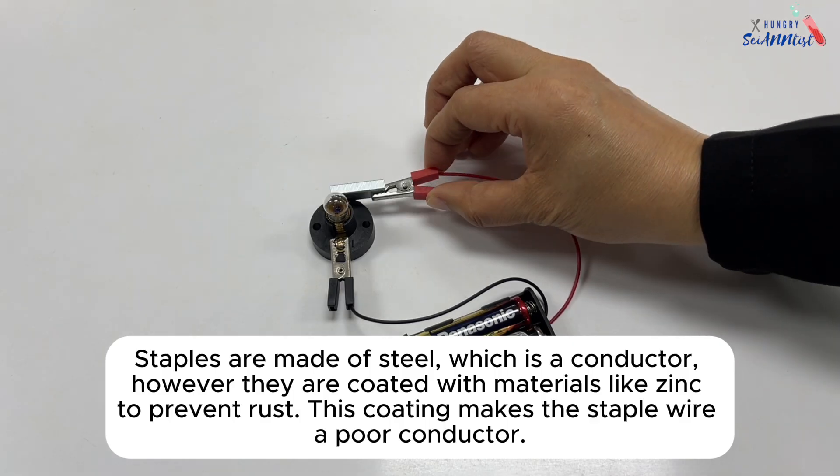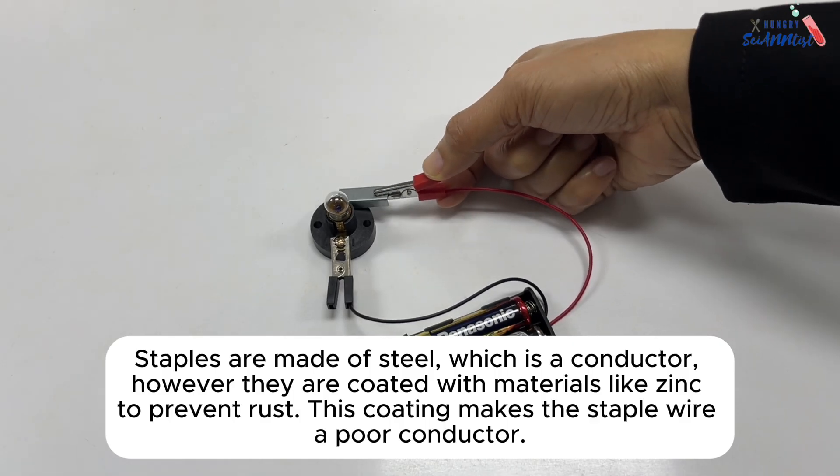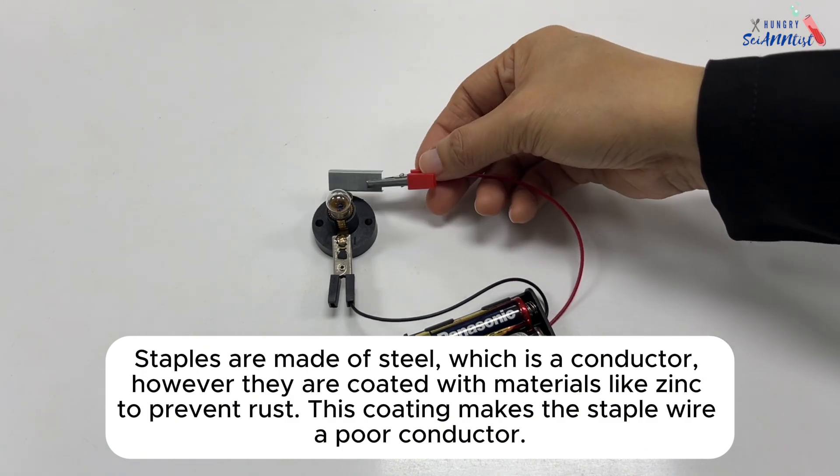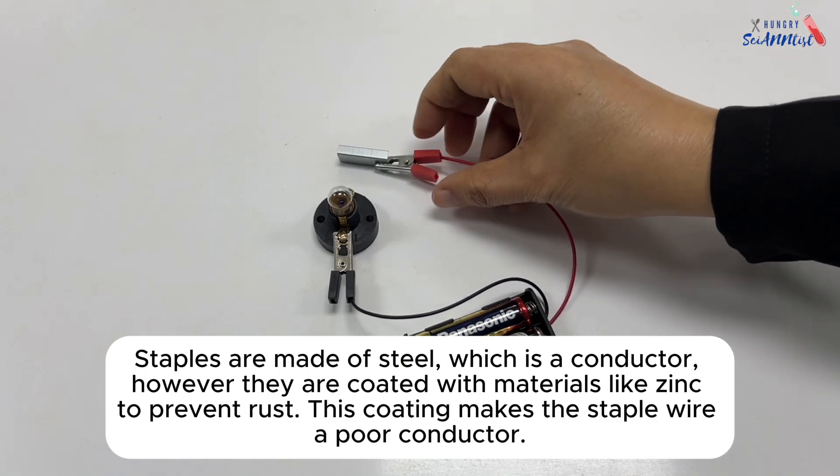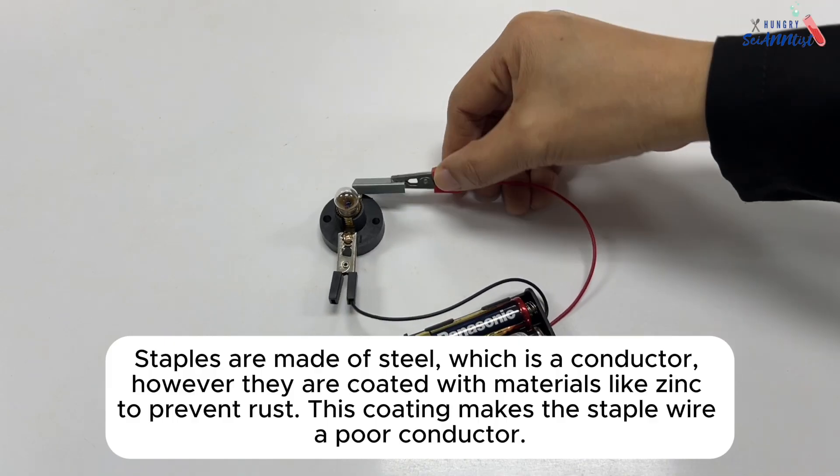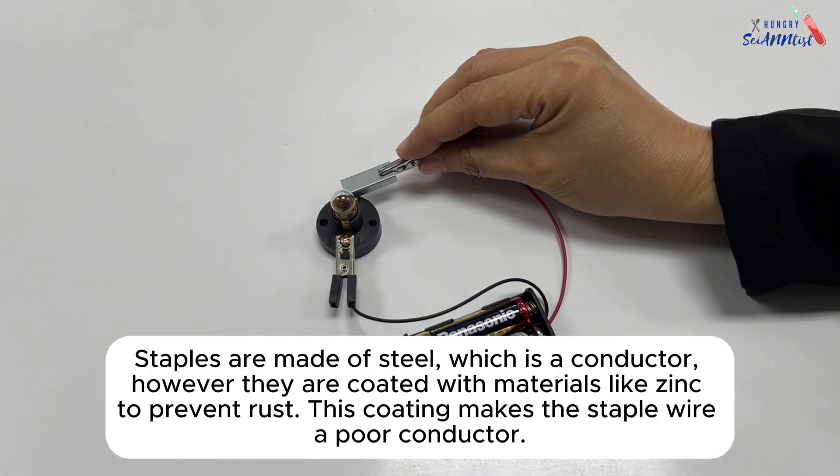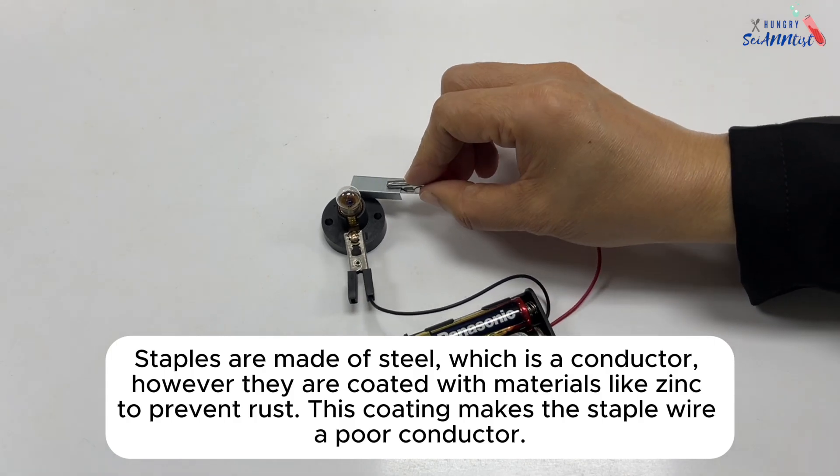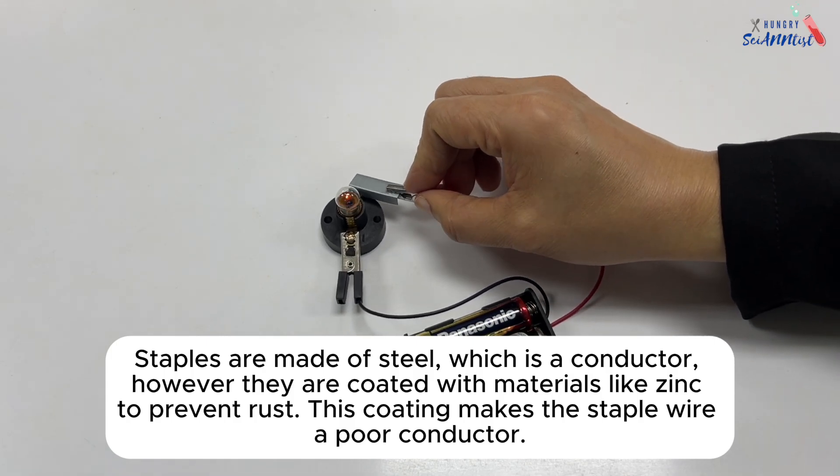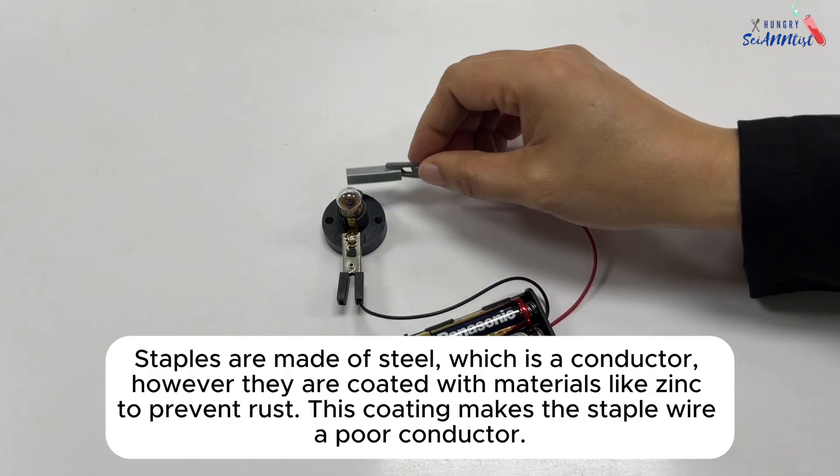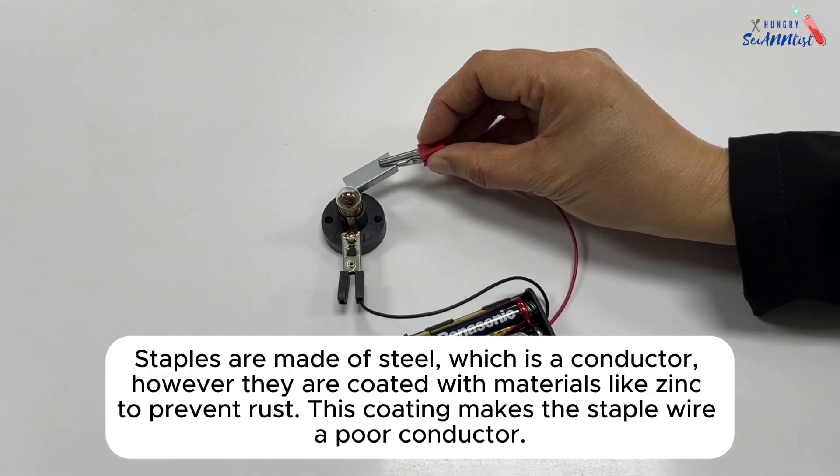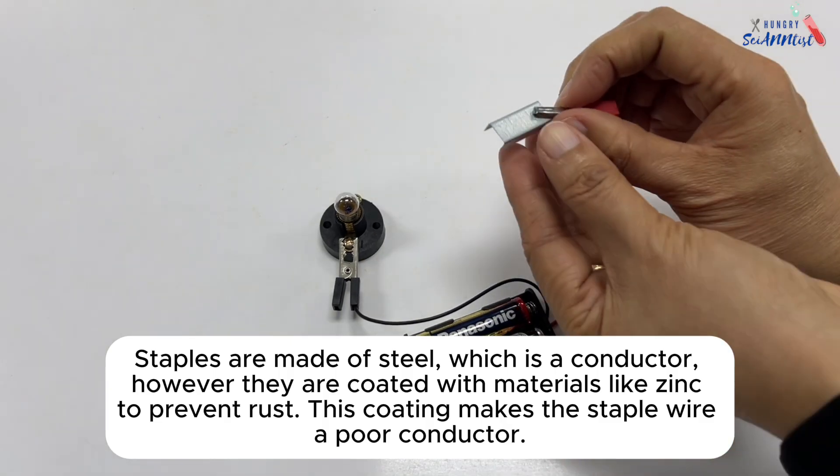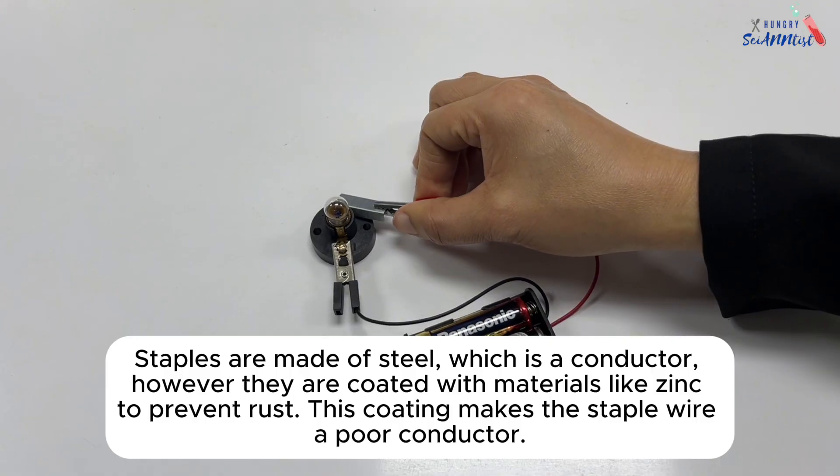However, they are coated with materials like zinc to prevent rust. This coating makes the staple wire a poor conductor of electricity. I tried it again and I found out that it does conduct electricity, however it's very low. See? It lights the bulb. Staple wire is a conductor.